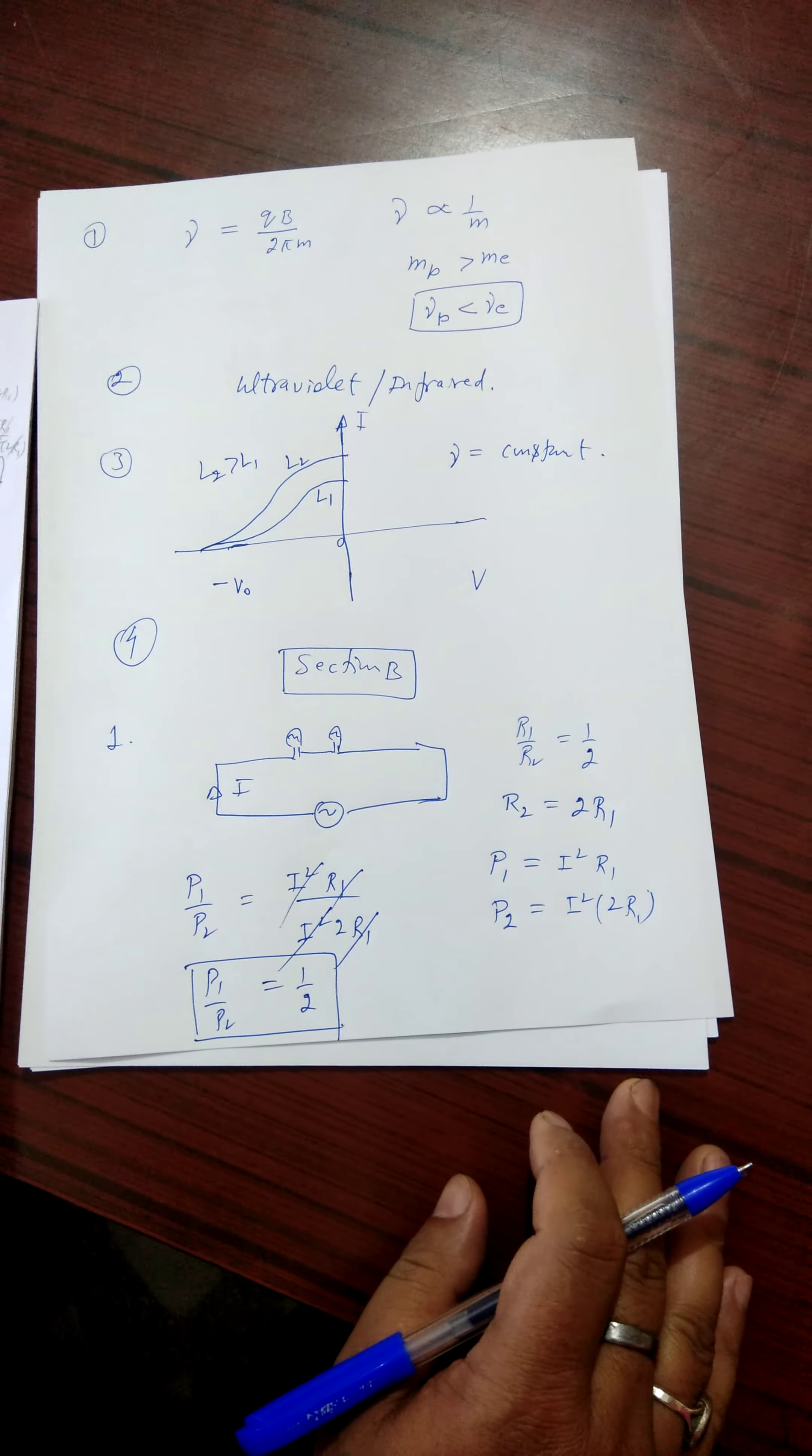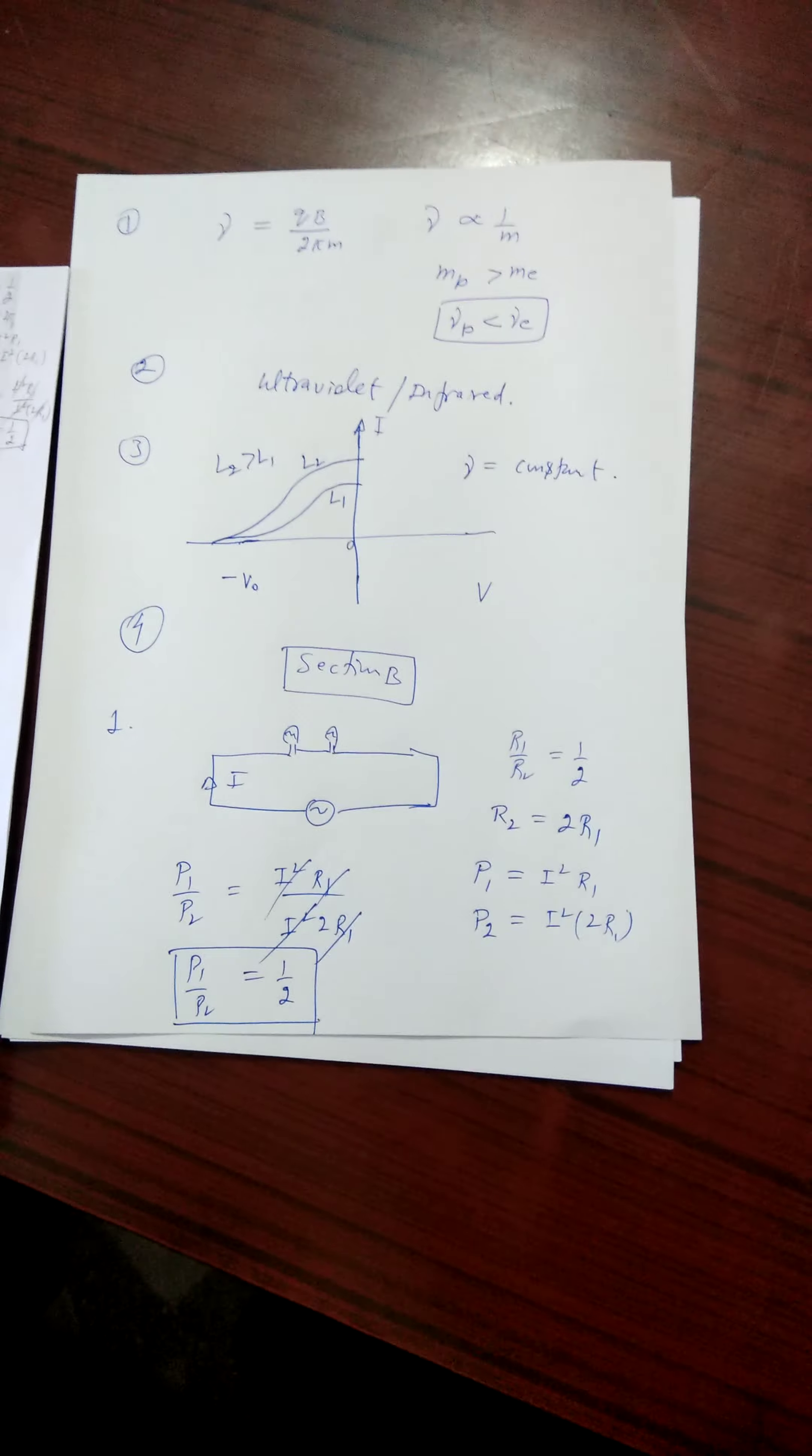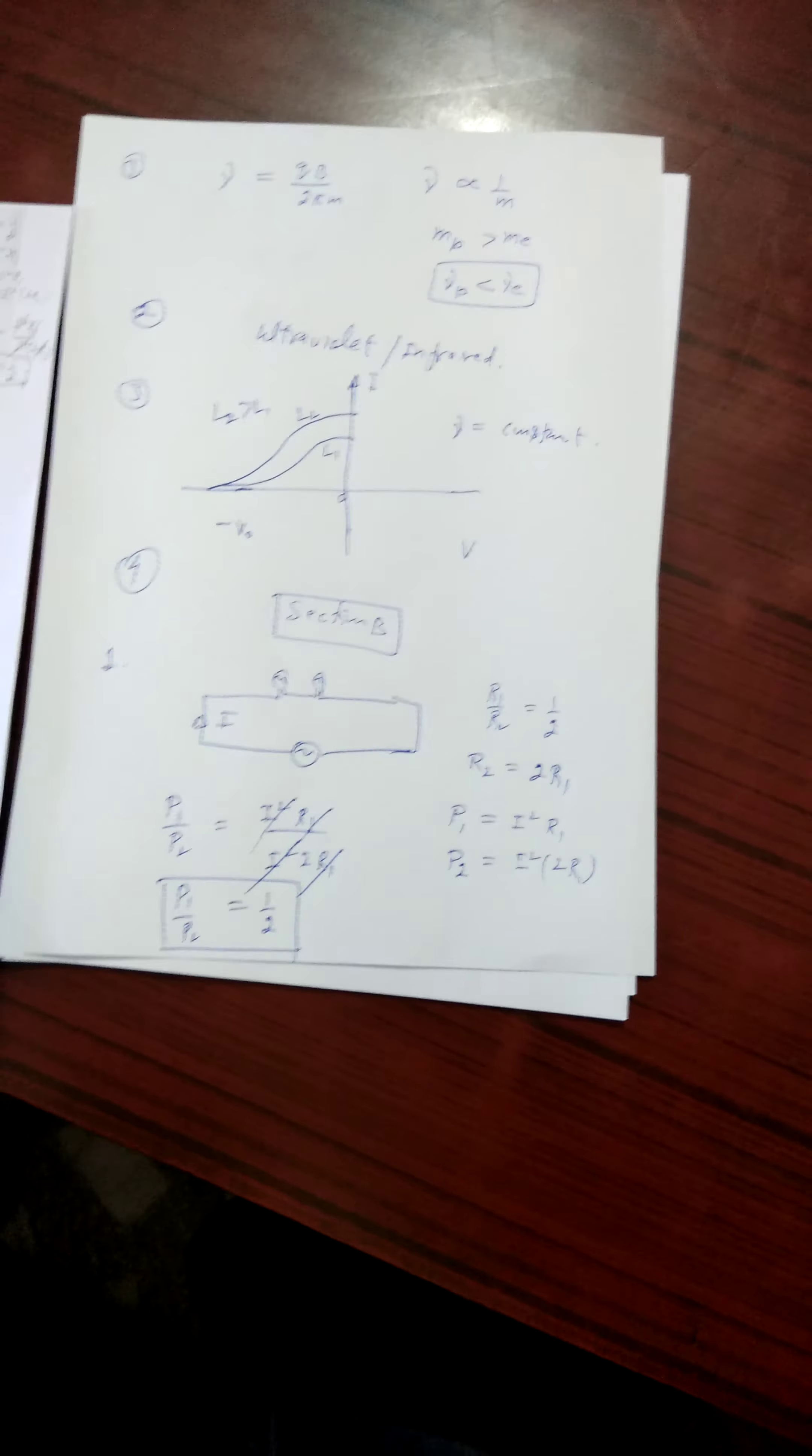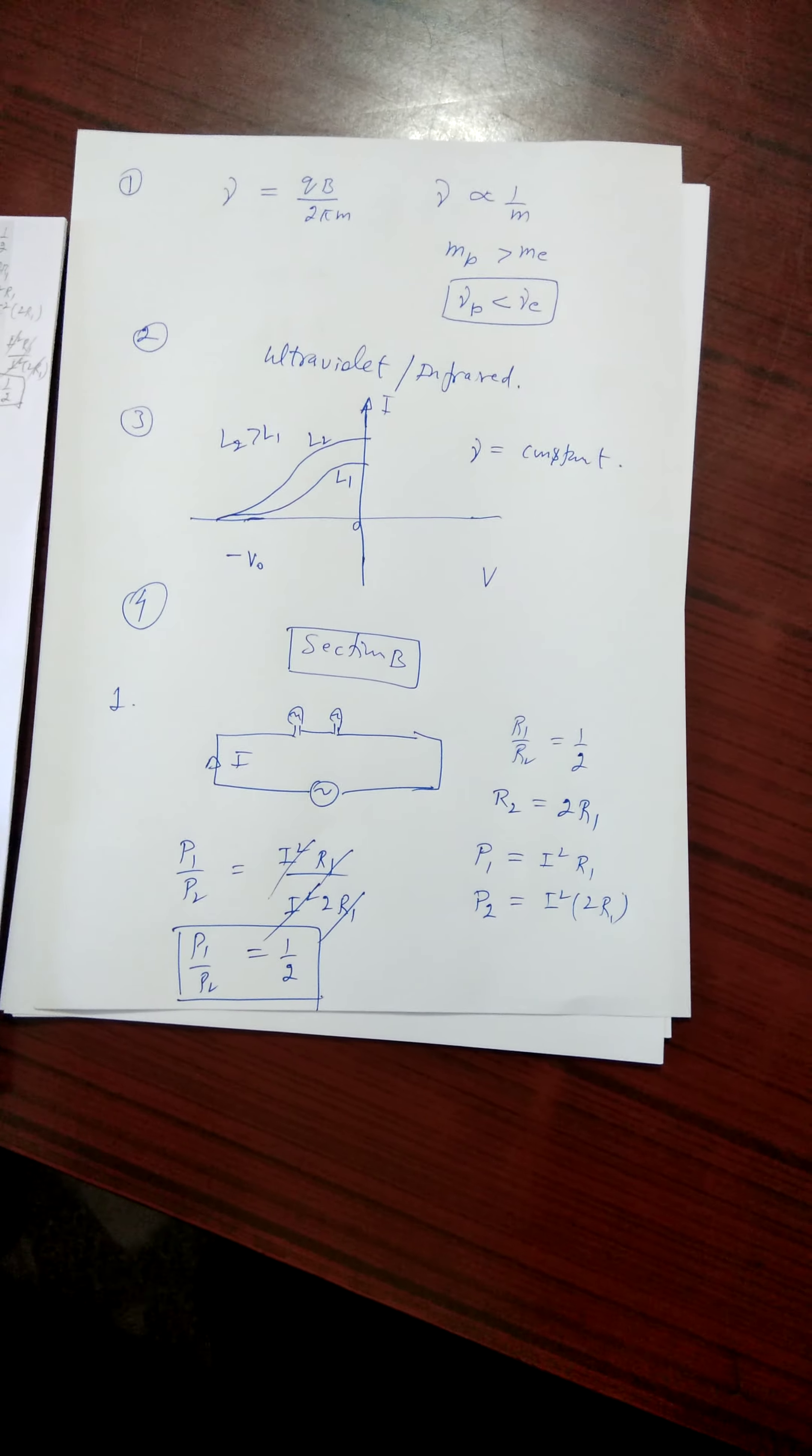Now see the second question of section B. 10 volt cell negligible internal resistance is connected in parallel across a battery. The battery of EMF 200 volt and internal resistance 38 ohm. As shown in the figure. Find the value of current in the circuit.